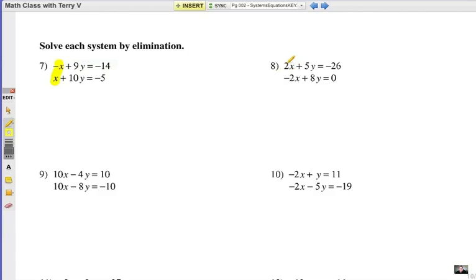Over here we have a positive 2x and a negative 2x, and those are opposites. Those would drop out. Now down here we have 10x and 10x, and those are exactly the same, same sign. So we're actually going to end up subtracting. And here the x's are exactly the same again, negative 2x and negative 2x. So we're going to subtract.